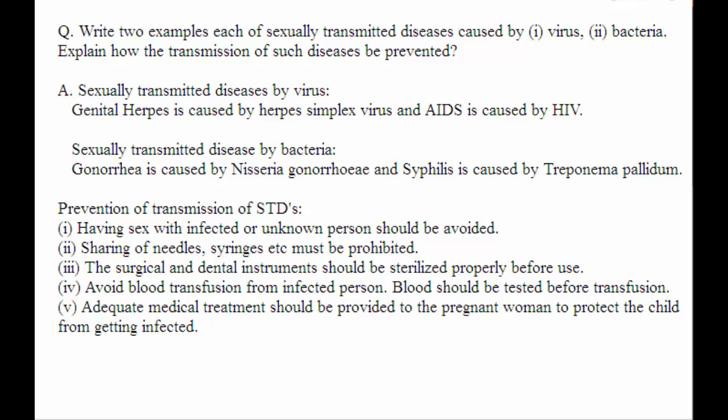Write two examples each of sexually transmitted diseases caused by virus and bacteria, and explain how the transmission of such diseases can be prevented. Sexually transmitted diseases are diseases which are transmitted by sexual mode or sexual act. These are also known as STDs. We'll see the diseases caused by viruses and bacteria.